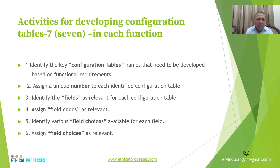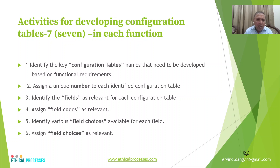The activities for developing configuration tables are primarily seven. First, designers need to identify the configuration tables required to be developed based on functional requirements — they need to have clarity on what configuration tables they need. Second, they have to assign a unique number to each configuration table. Third, they need to identify the fields relevant within each configuration table and assign field codes. These are important from an easier access and digitalization perspective. Fourth, identify the various field choices which are relevant, which will be covered in the next few slides.